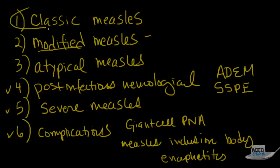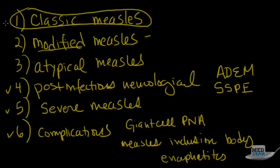The one I want to focus on is the most common: classic measles — how to identify it in patients you see in the clinic or emergency room. There are four stages of measles infection: I, P, E, and R — incubation, prodrome, exanthem, and recovery and immunity.